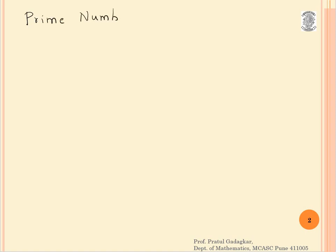Prime numbers are numbers which are not divisible by any number other than 1 and itself. The prime numbers are: 2, 3, 5, 7, 11, 13, 17, 19, and so on.